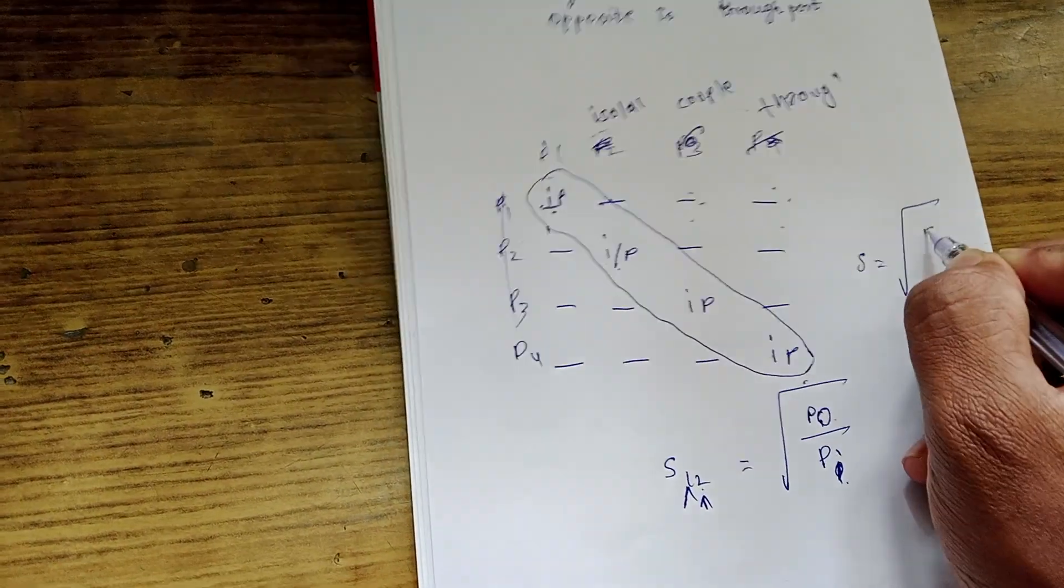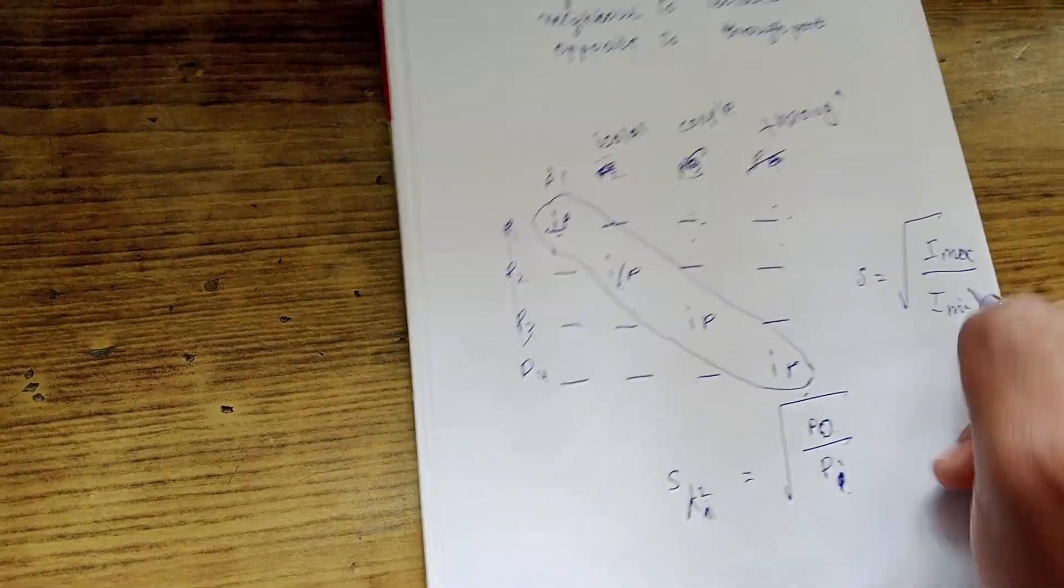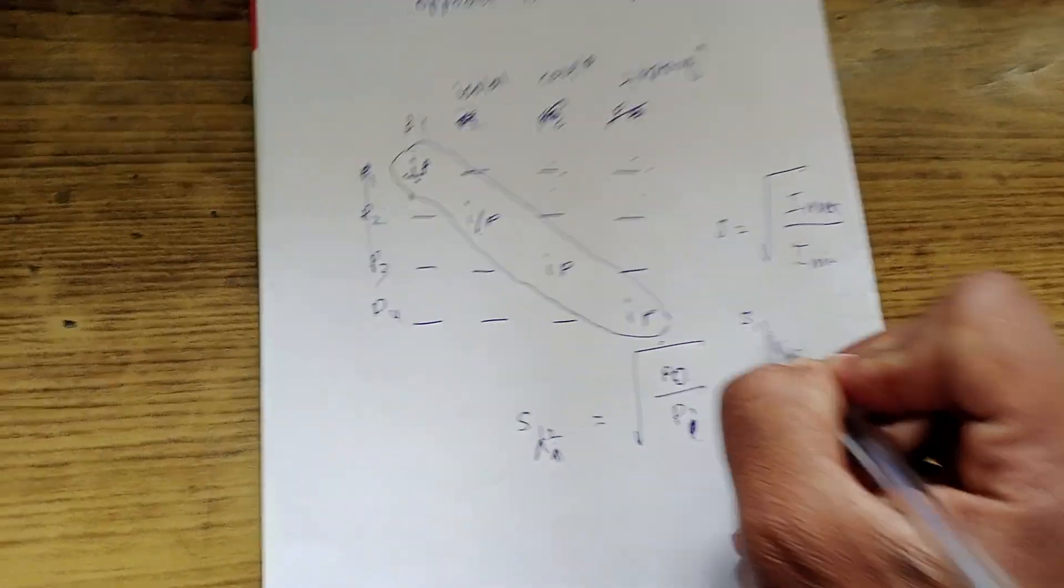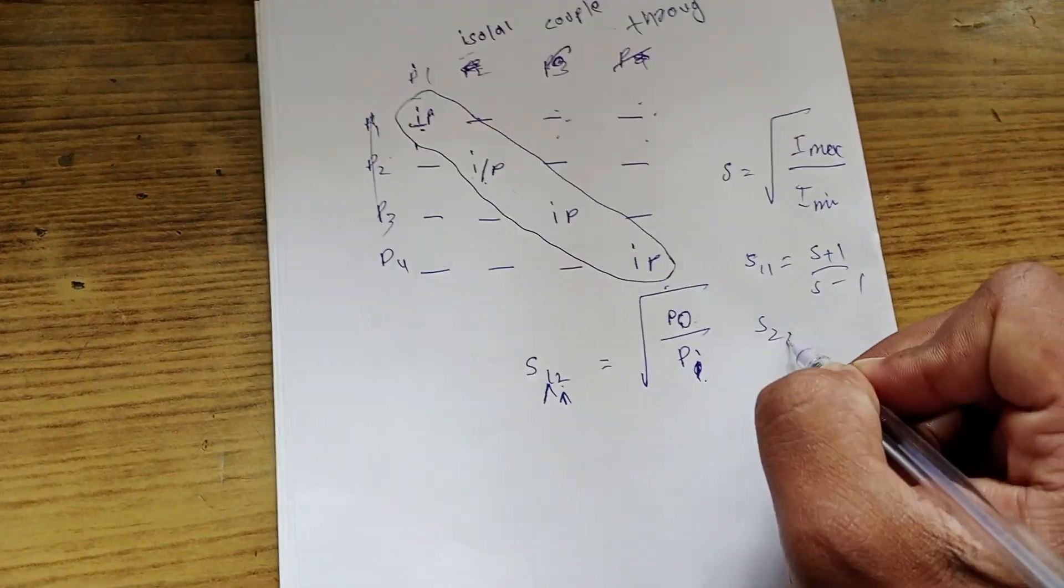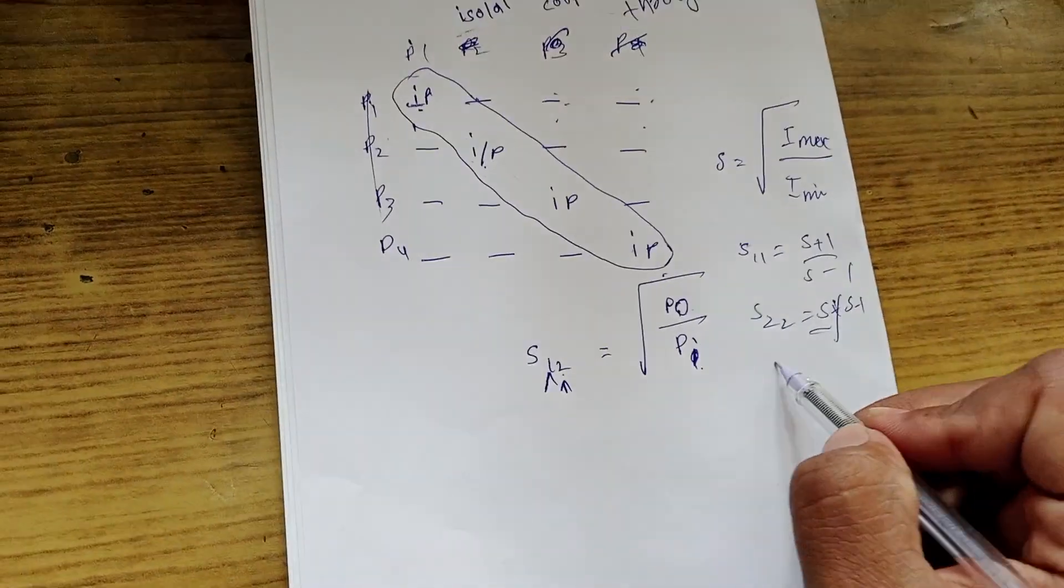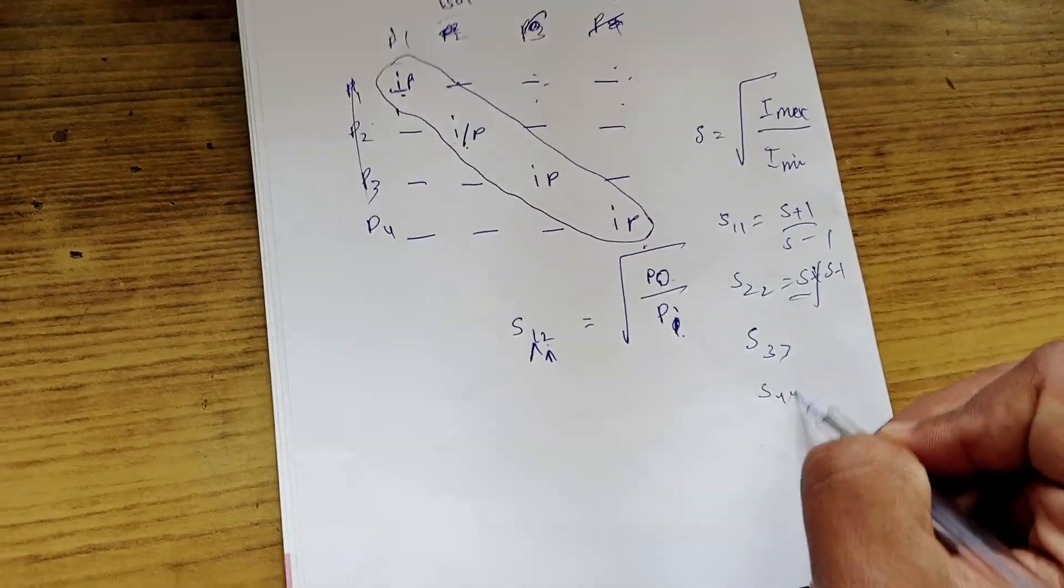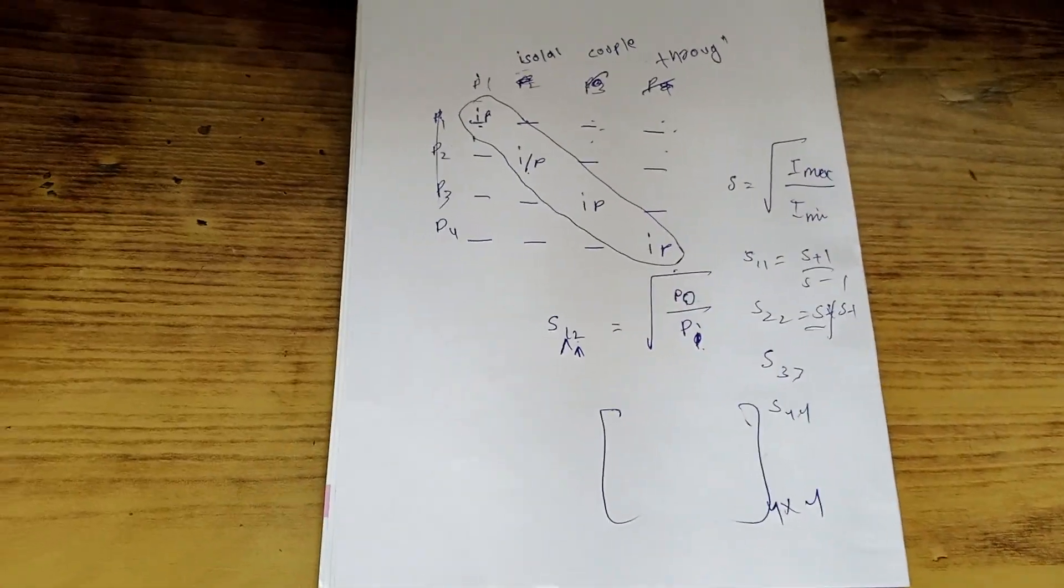Wherein you will get S equals under root (I max minus I min) by (I max plus I min). And from that, you can get S11 equals (S minus 1) by (S plus 1), or S22 equals (S minus 1) by (S plus 1). In the same way, you have to calculate S33 and S44. Once you are done with that, you will get a 4 by 4 S matrix.